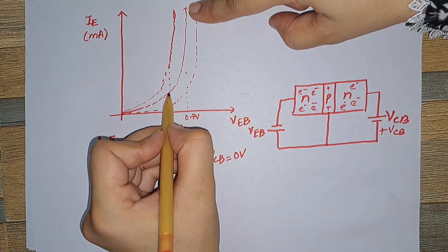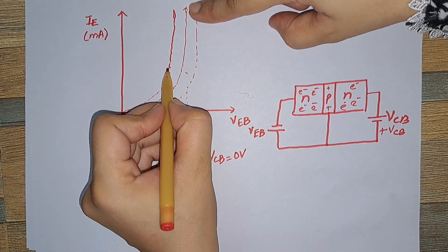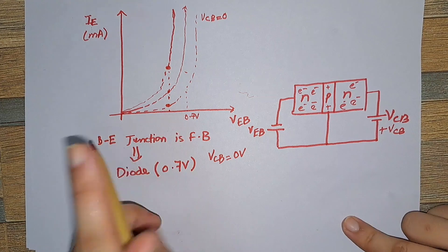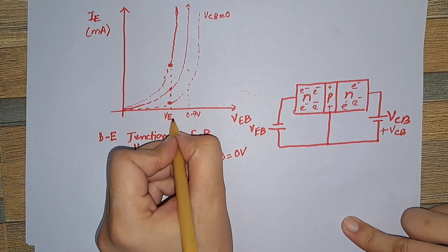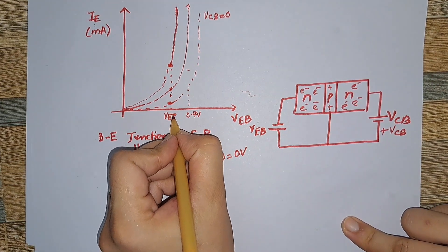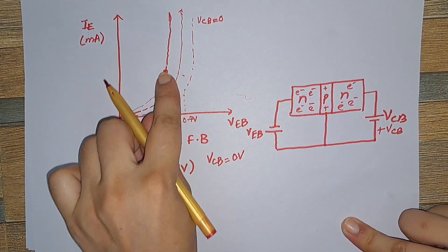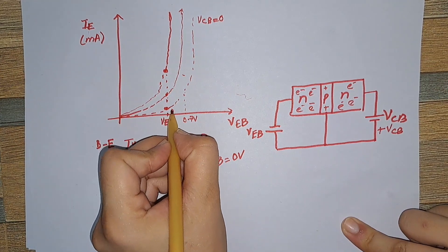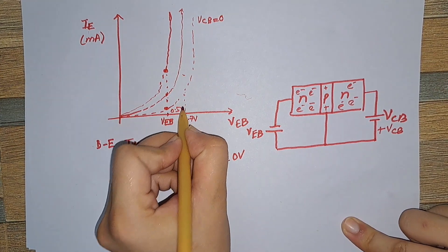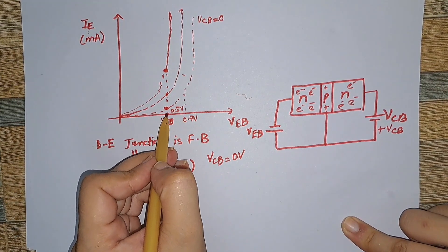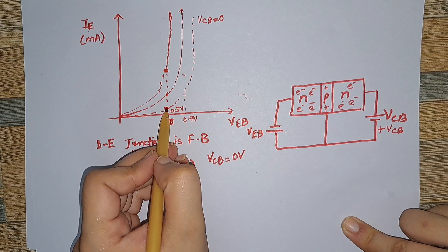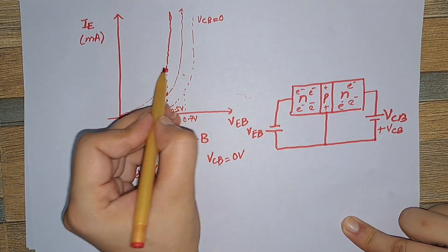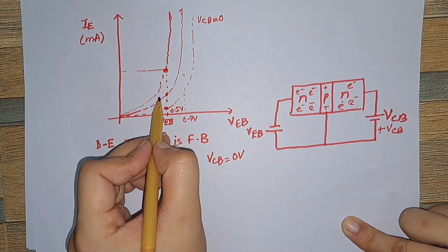So when VCB has some positive value, we will see an abrupt change or earlier conduction in the transistor, and IE suddenly increases. Similarly, if you keep increasing the value of VCB, the more positive potential will attract more electrons from the emitter region into the collector region, thus enhancing the emitter current and reducing the VEB required for conduction. So for a fixed value of VEB, say 0.5 volts, the emitter current is increasing.